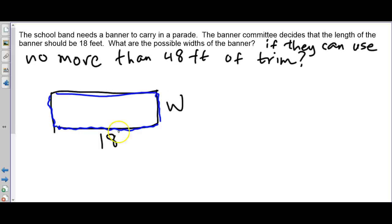So perimeter we need all four sides. We know the bottom is 18 that means the top is also 18. Now the side is W so we also know the left side is W. So perimeter we add all of those together: W plus 18 plus W plus 18. They said we can use no more than, that means all of this added together should be less than or equal to 48. We have to use 48 feet exactly or less than 48 feet of trim.